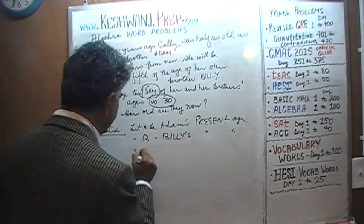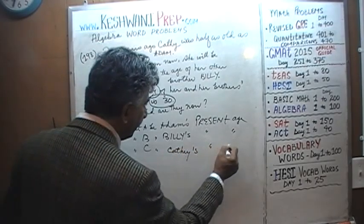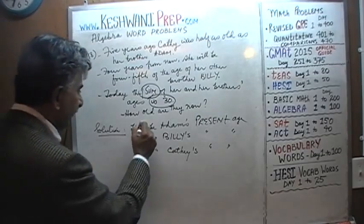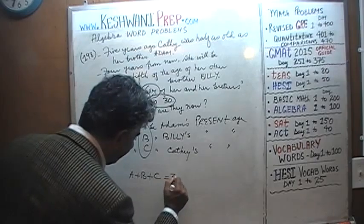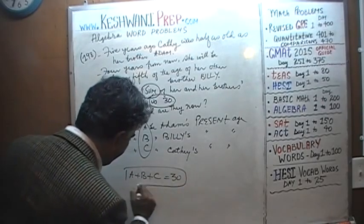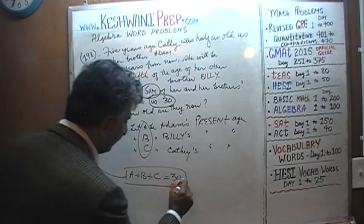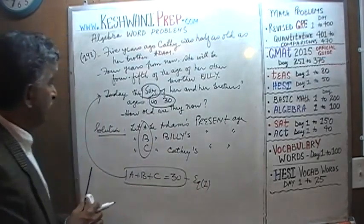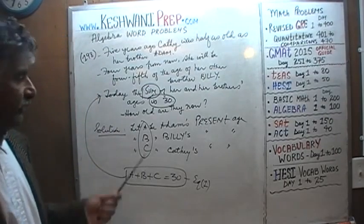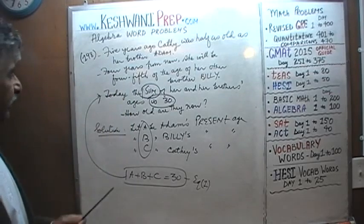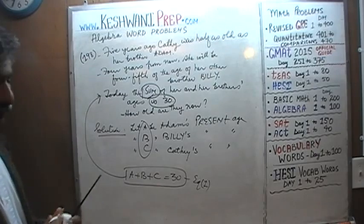And let C represent Cathy's present age. Now that variables A, B, and C represent their present ages, we know that A plus B plus C equals 30 — that's equation one. Now let's work on equations two and three from the first and second sentences: five years ago and four years from now.